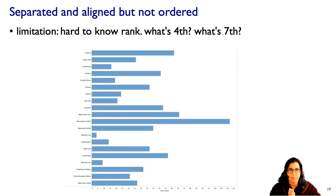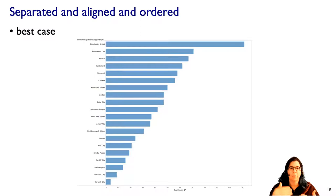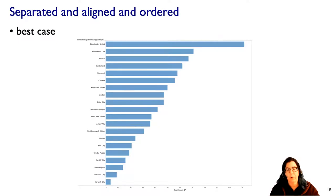We're still separated and aligned but not yet ordered. Once we have an ordered bar chart — where the same attribute used to length-code the bars is also used to order them — it becomes completely trivial to identify the fourth or seventh largest. This data-driven ordering of a bar chart is really the best case.